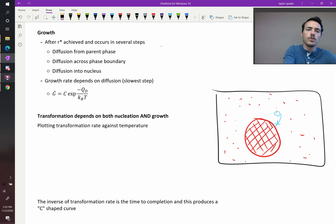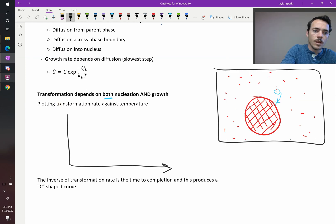So taking both nucleation rate and growth rates into account, now we can look at our transformation since it depends on both nucleation and growth and we can plot it against temperature just like we've been doing. So if this is our temperature, the temperature that thermodynamics predicted for this transformation, you had a couple things.